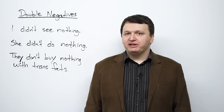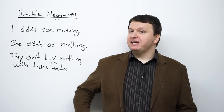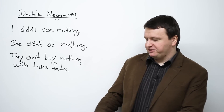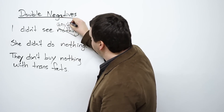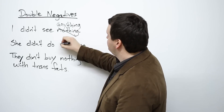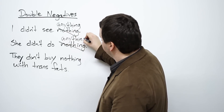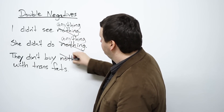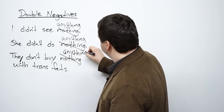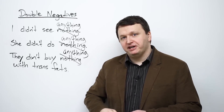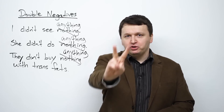So what word should replace 'nothing' in these three sentences? Anything — that's absolutely correct. So you can say 'I didn't see anything', 'She didn't do anything', or 'They don't buy anything with trans fats.' Just remember: watch out for those double negatives. Now on to number two.